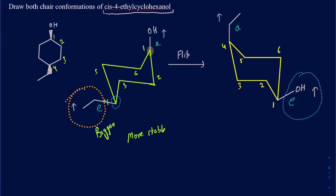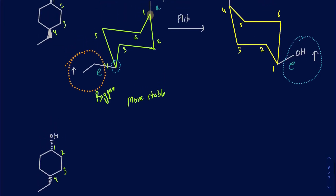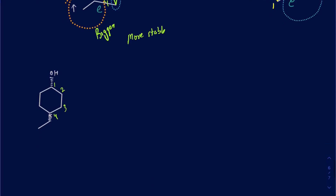Now let's try to draw it the other way — what if both groups are going back into the page? I'll copy that down and make both going back into the page; everything else stays the same. Let me draw one chair first, and I'll call this 1 here, 2, 3, 4, 5, and 6.